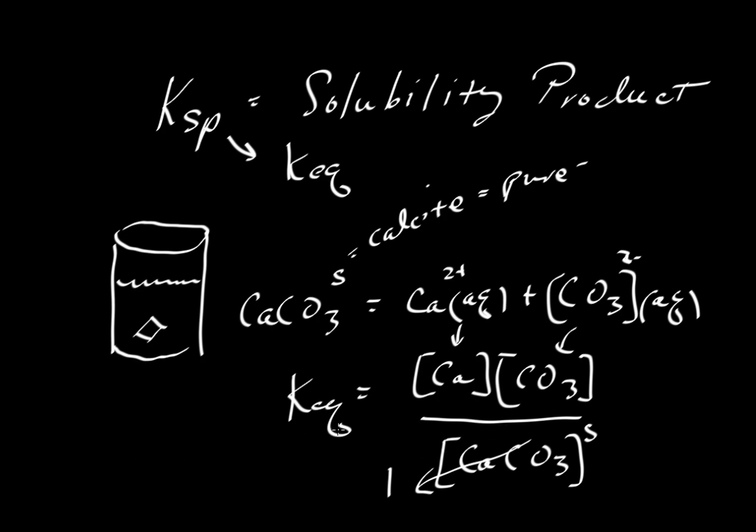And so we can rewrite the Keq as just a function of the products, the product of calcium ion and carbonate ion. And instead of calling it Keq, we call it K-sub-sp. So that's the solubility product, where we are looking at just the products. I think that's the origin of the term. We're looking at the solubility of calcite, but here we only need the products rather than the reactants.